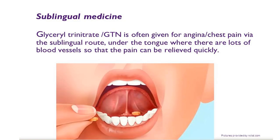The classical example for sublingual drug administration is glyceryl trinitrate, usually given for angina or chest pain. When a patient has chest pain, we need immediate action. If given orally it takes time and undergoes first pass metabolism, but placed sublingually the drug gets immediately absorbed and the pain is relieved. Glyceryl trinitrate is a vasodilator that relieves pain in angina pectoris.